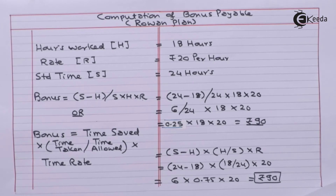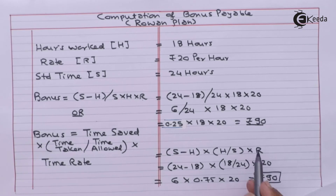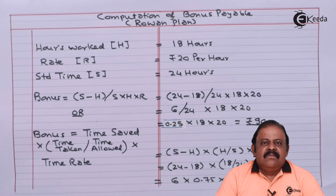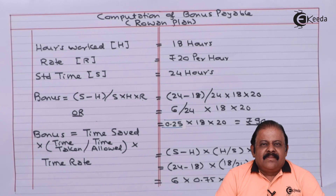Under Rowan Plan, we can calculate bonus payable. It is calculated as Rs 90 under both formula methods. We have studied under Rowan Plan how a method can be developed where the benefit can be shared by the employer as well as the employee. Thanks for watching this video.